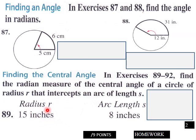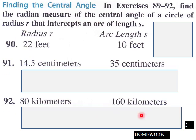Then find the central angle here. You've got a radius r of 15 inches and the arc length is 8 inches. Find the radian measure with these measures here.